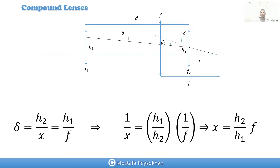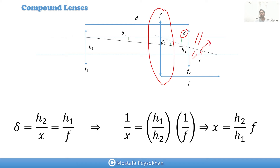Now we have a representative lens f for these two lenses combined. This angle is delta, and because these two lines are parallel, this angle is also delta. So delta equals h2 over x, and from the same perspective equals h over f, because for the representative lens we have a beam at infinity bending to the focal point. Instead of two lenses we place one representative lens, and it focuses the beam. So h2 over x equals h1 over f.